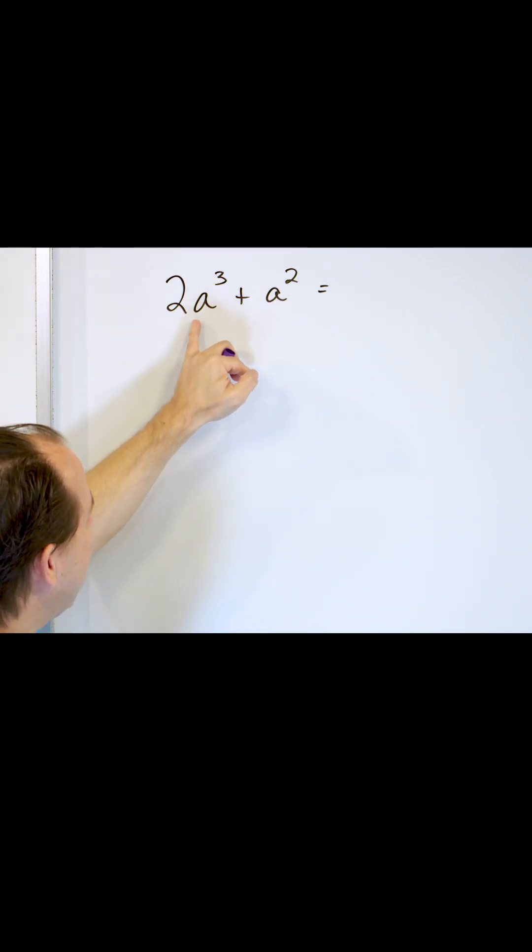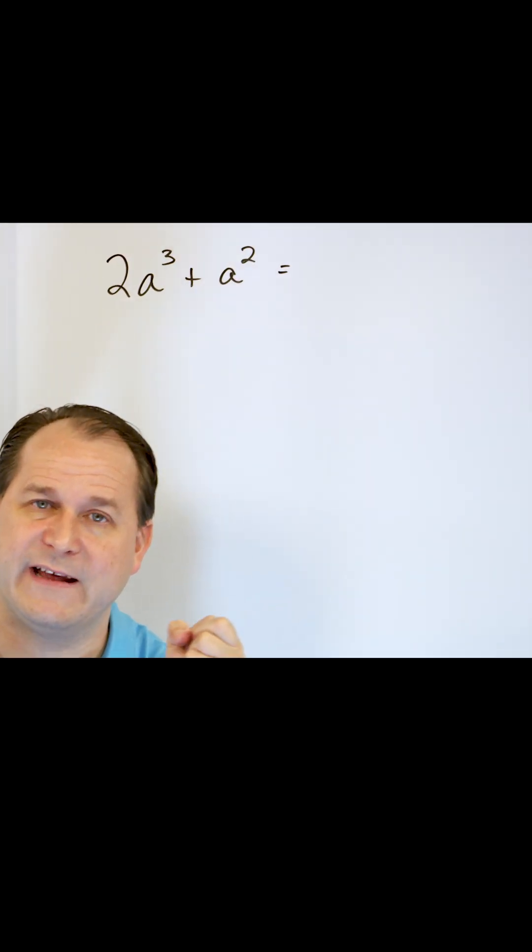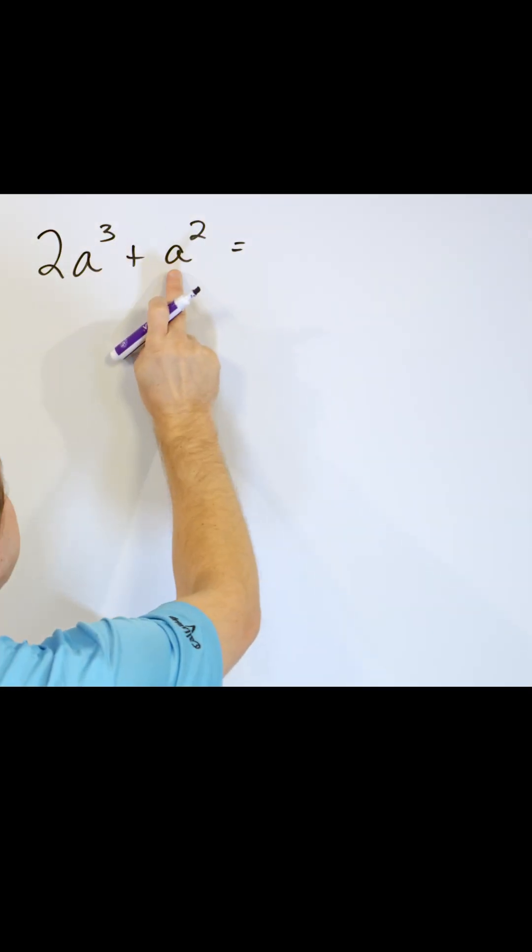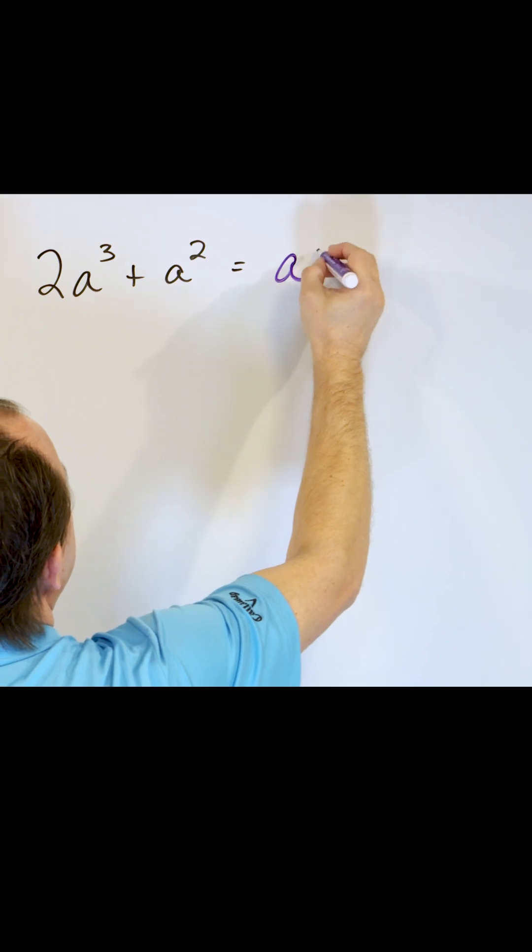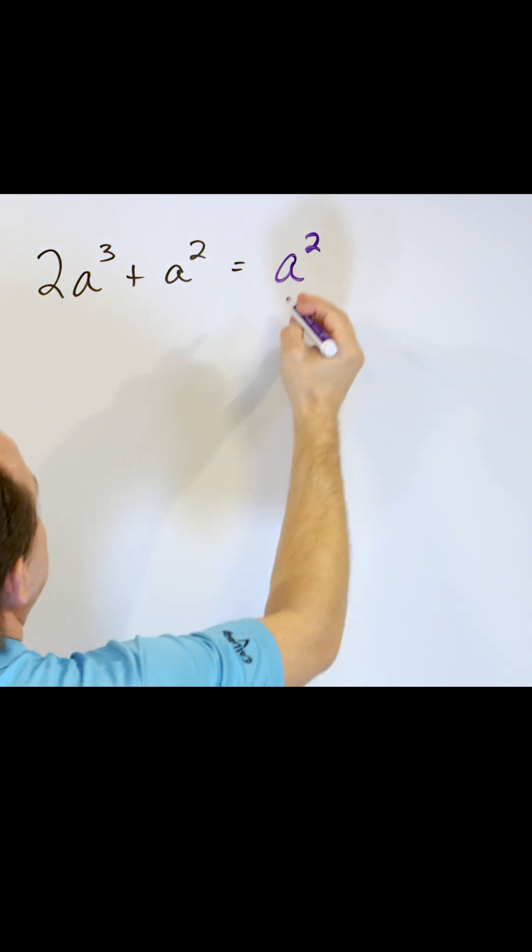I could pull a single a out. Yeah, I could do that, but you're always wanting to pull the largest thing out that you can. I can actually pull out an a squared. Why? Because I have two of these a's here and I have three of them here, so that's the largest thing I can pull out.